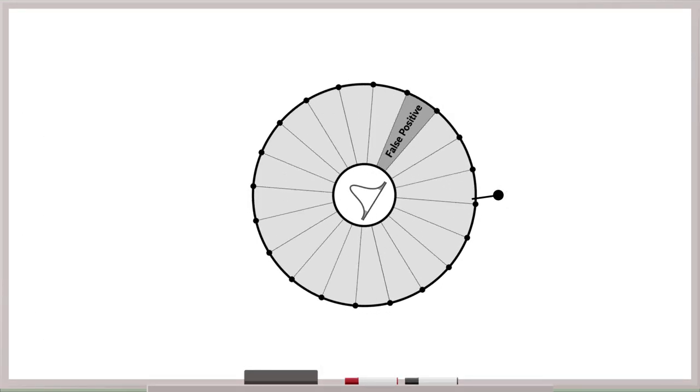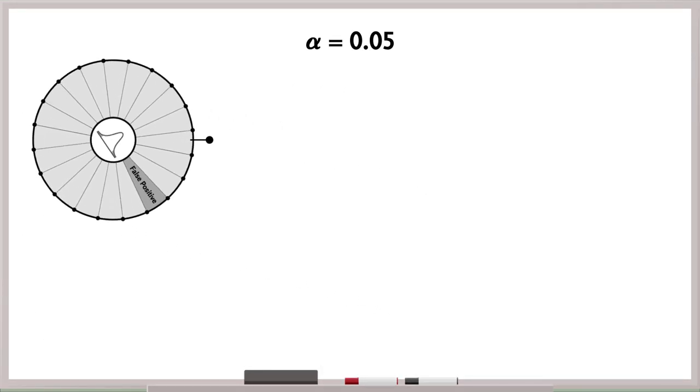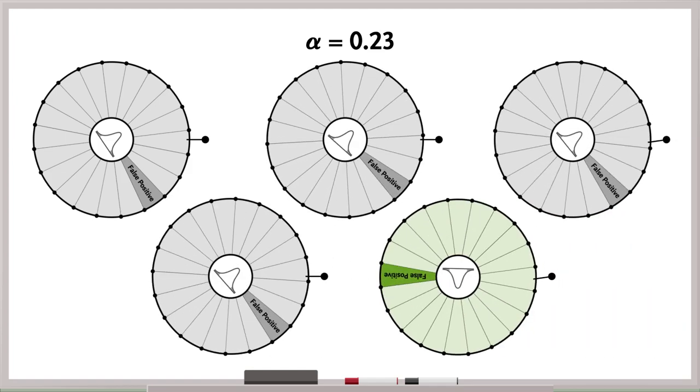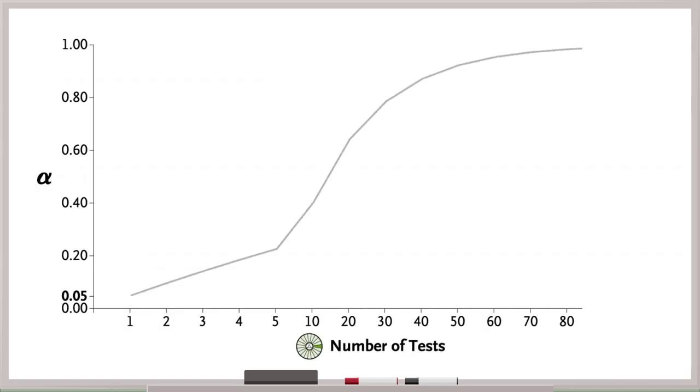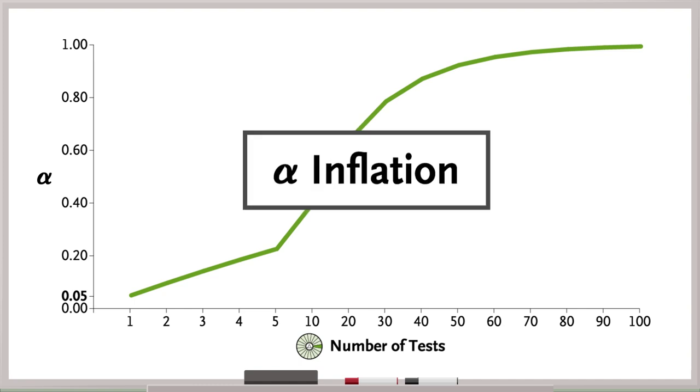Because each statistical test has the potential to introduce error, the more tests that are performed, the more likely it becomes that we will get a false positive result. Our alpha is no longer .05, but increases in proportion to the number of tests we perform. This is known as alpha inflation, and this problem exists even in randomized studies.